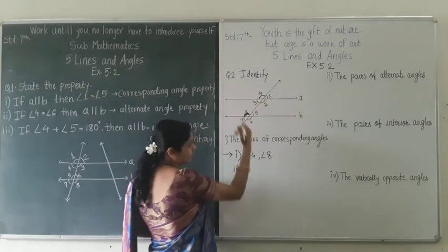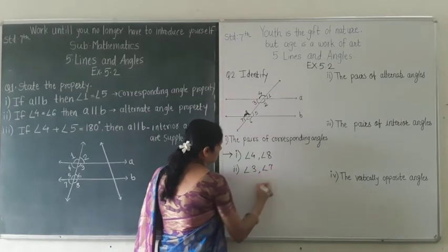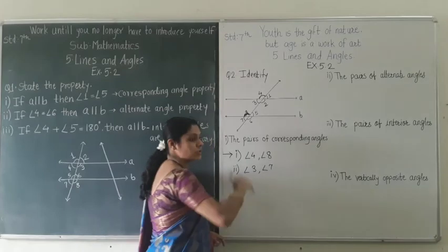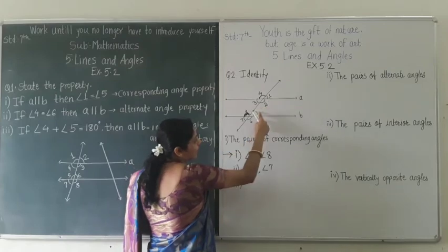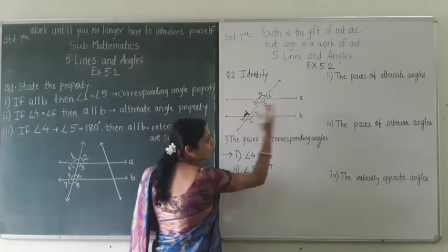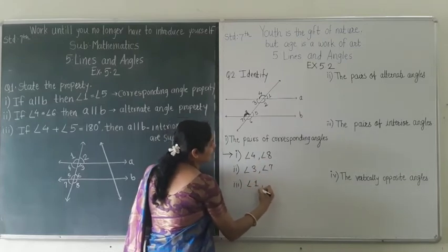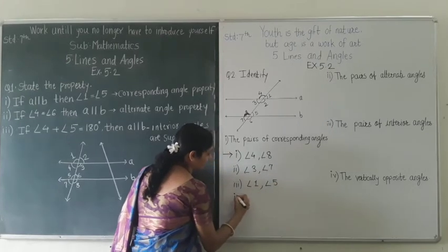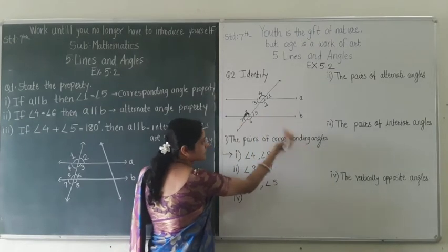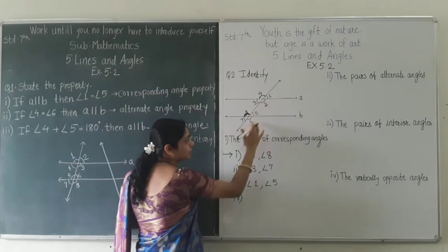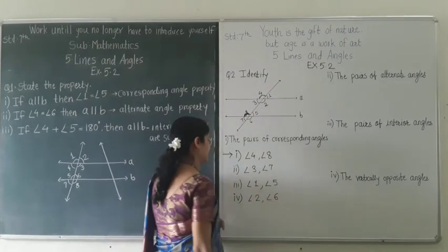Now we will choose the right-hand side of the transversal. Angles 1 and 5 both show the upward direction and are on the same side of the transversal, so the third pair of corresponding angles is angle 1 and angle 5. Angles 2 and 6 are on the right-hand side and show the downward direction, so the fourth pair is angle 2 and angle 6. You can also recognize corresponding angles because they form an F-shape.